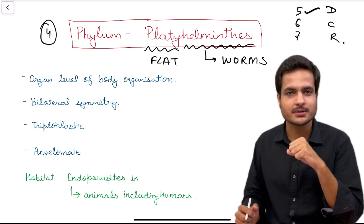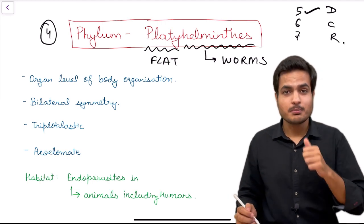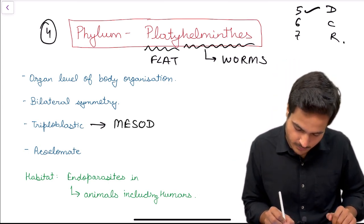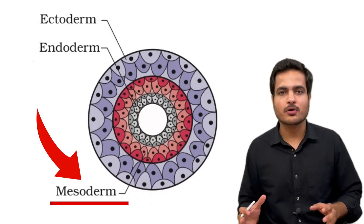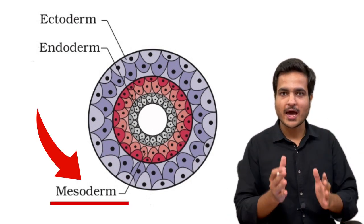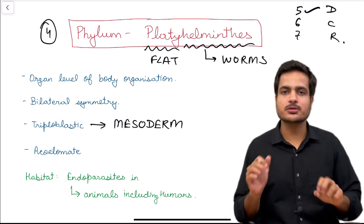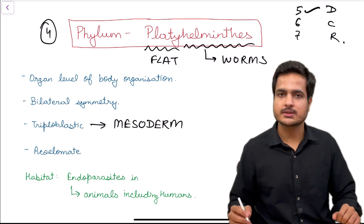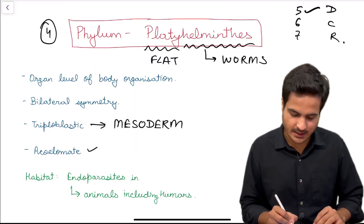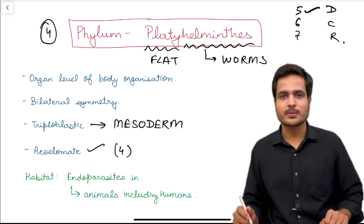The third golden point: the number of germ layers. Here we have three germ layers — ectoderm (outer), endoderm (inner), and mesoderm (middle). Mesoderm first appears in flat worms, making them the first animals in evolution to have this middle layer. Therefore we call them triploblastic — 'triplo' meaning three, 'blastic' meaning germ layers. However, there is no cavity in this mesoderm, so these organisms are still acoelomate. The first four phyla are all acoelomate.